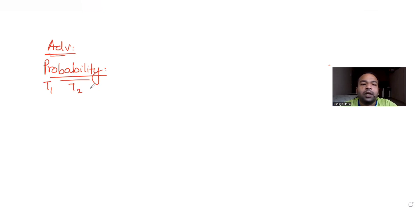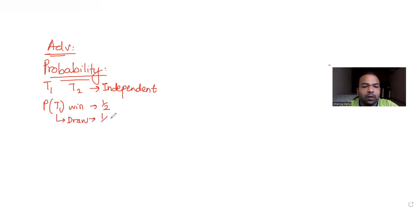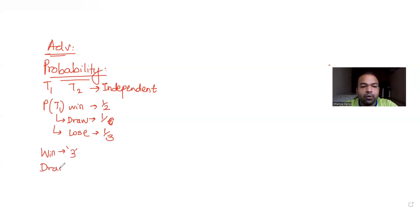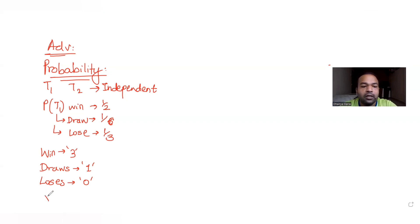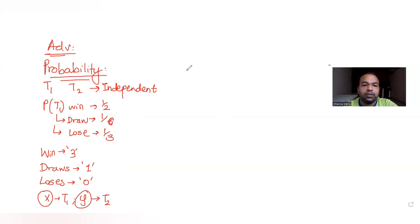We need to assume that the outcomes of the two games are independent of each other. The probability of team 1 winning is 1/2, the probability of team 1 drawing the match is 1/6, and the probability of team 1 losing the match is 1/3. If a team wins it gets three points, a draw gives one point each, and a loss gives zero points. X denotes the total points scored by team 1 and Y is the total points scored by team 2.